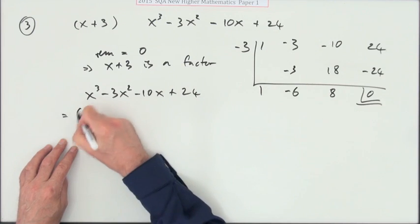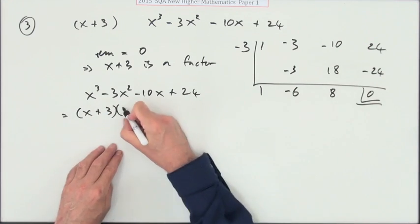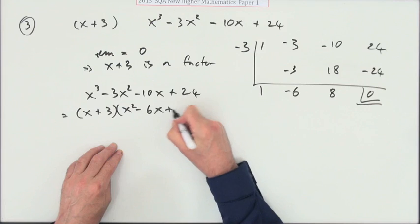Would be x plus 3 times this part: x squared minus 6x plus 8.